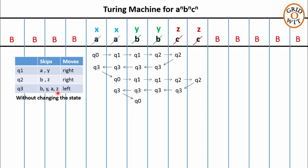Now all the a's are replaced with x, so this time q0 is pointing to the symbol y instead of a. q0 on reading y will change its state to q4 and move towards the right. The responsibility of state q4 is to verify that there should not be any symbol b or c left to be replaced towards the right side of the string when the a's are already depleted. q4 will move towards the right skipping y's and z's, and as soon as q4 reaches the blank symbol, the Turing machine will accept the string by changing its state to the final state q5.